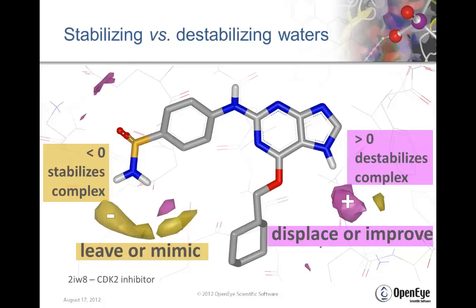In regions where water stabilizes the complex, we can either leave it alone because it is helping, or we can try to mimic that water with our modification. In regions where water is destabilizing the complex, the obvious thing to do is to try to displace it. It's also possible to simply improve it — to try to turn it from a destabilizing to a stabilizing water.